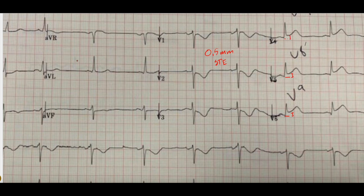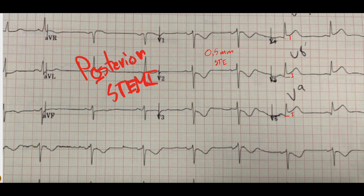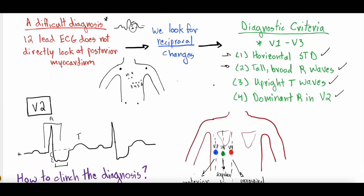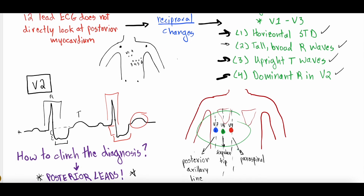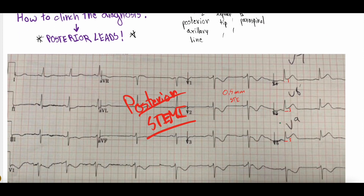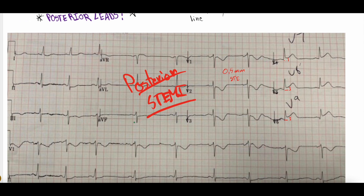So if you have a patient with a concerning story and their 12-lead ECG shows horizontal ST depressions, tall broad R waves, upright T waves, and a dominant R wave in V2 — get the posterior ECG. Place V7, V8, and V9 on the patient's back and look for at least 0.5 millimeters of ST elevation in those posterior leads. If present, activate the cath lab for a posterior STEMI.